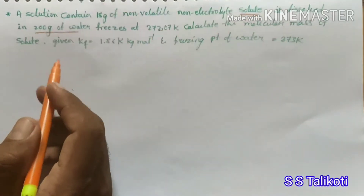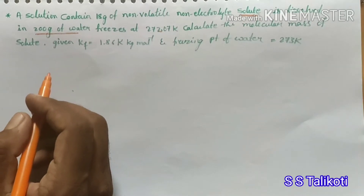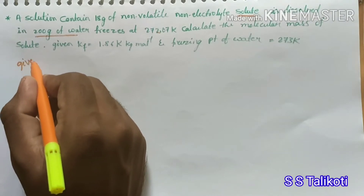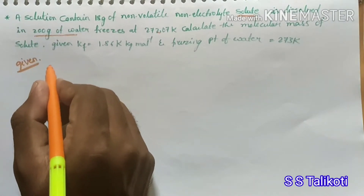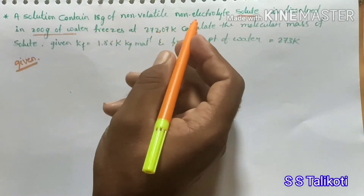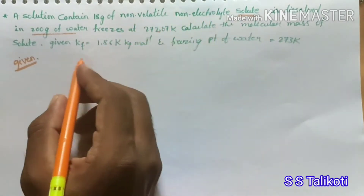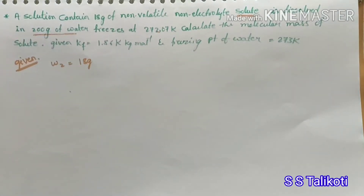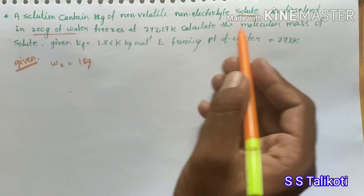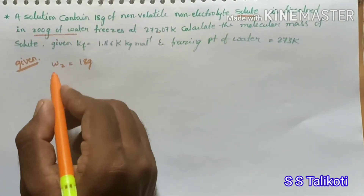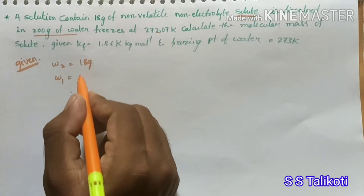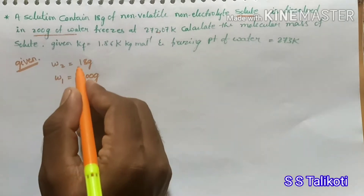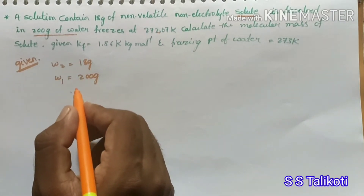Whenever you're solving a problem, first write the given values. They have given the mass of the non-volatile solute: w2 = 18 gram. It is dissolved in 200 gram of solvent, so w1 = 200 gram. This is the solute and this is the solvent.